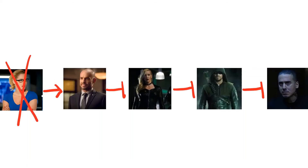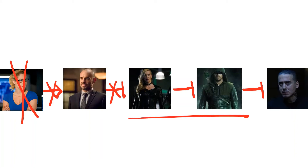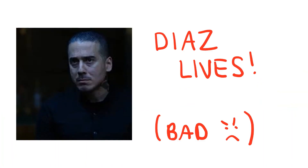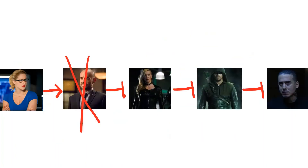Now you might be thinking to yourselves, what if a mutation in the sequence were to occur? For example, if Felicity was gone — then she would not promote Quentin, and Quentin would not inhibit Laurel, so therefore Laurel would inhibit Oliver, and Oliver would not be able to inhibit Diaz. So Diaz lives, which is bad.